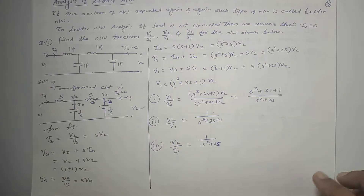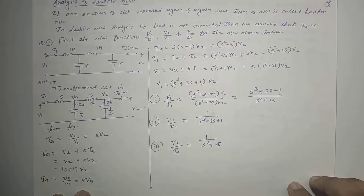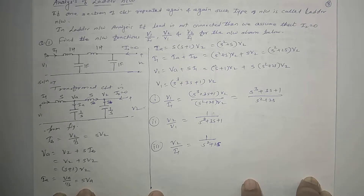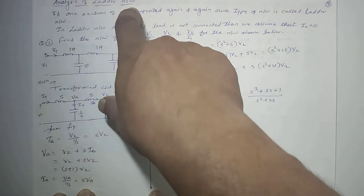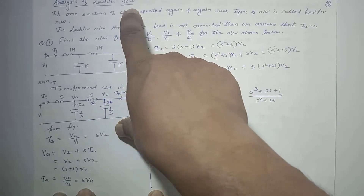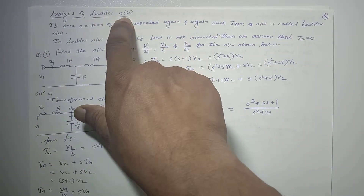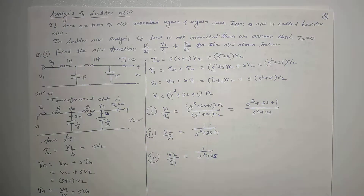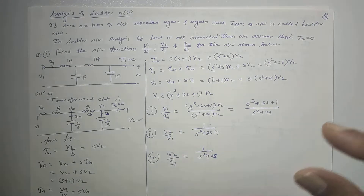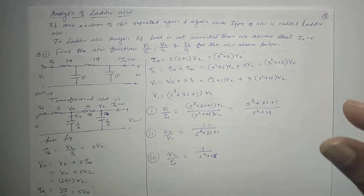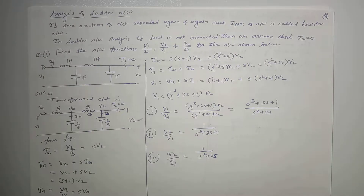Hello everyone. Now let us see another topic of this chapter: analysis of ladder network. A ladder network is one where one section of the network is repeated again and again — such type of network is called a ladder network.